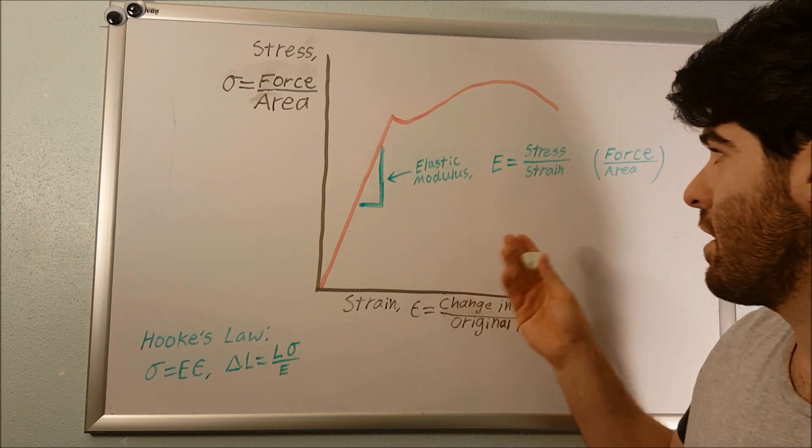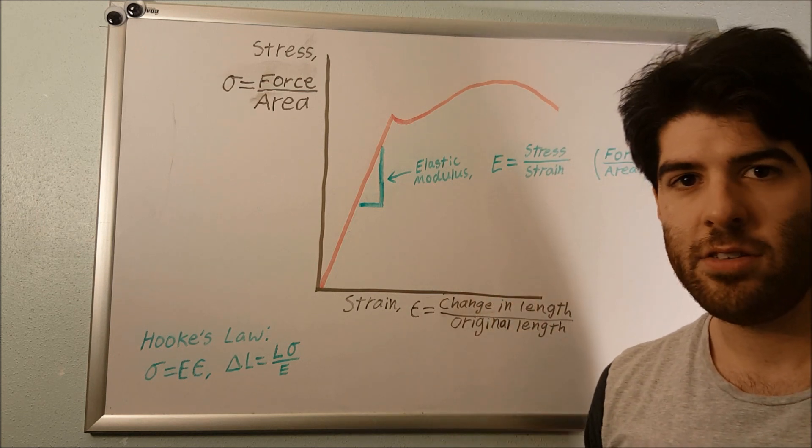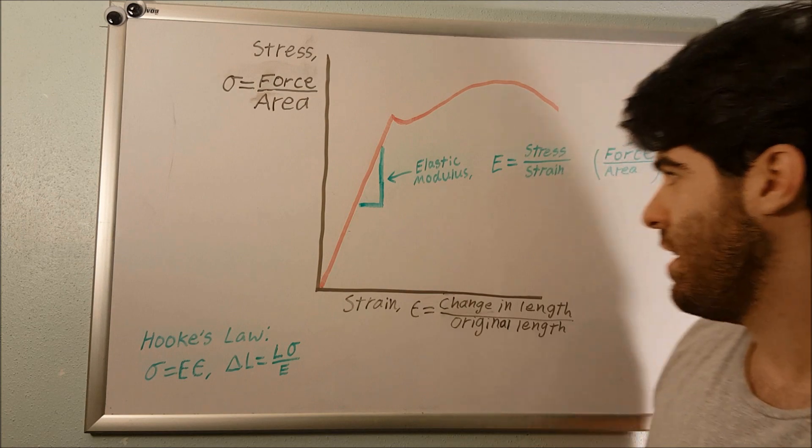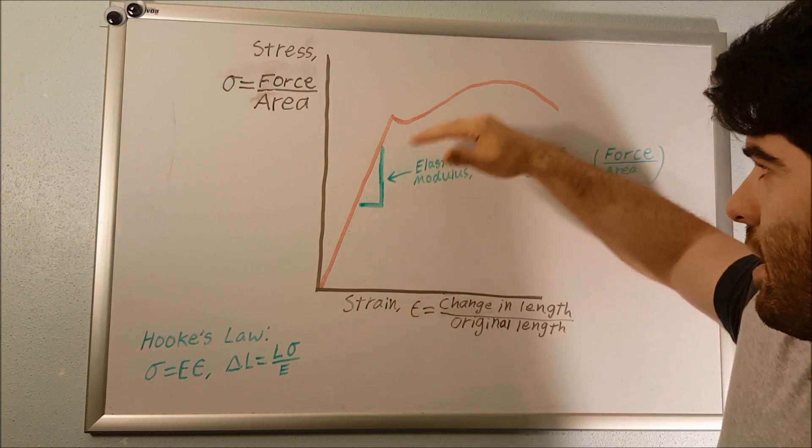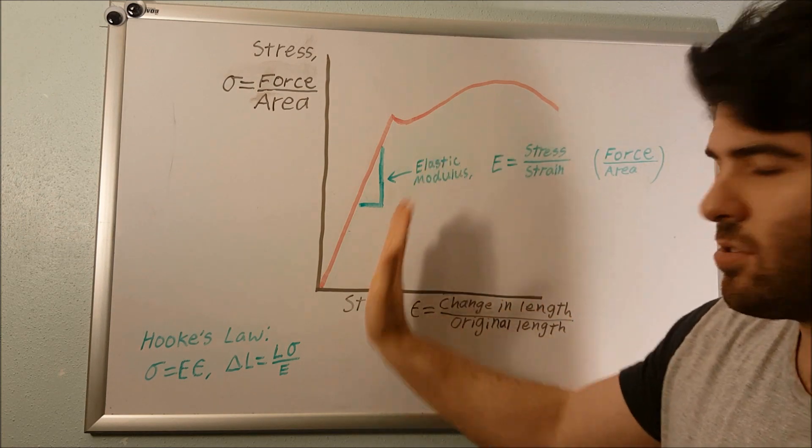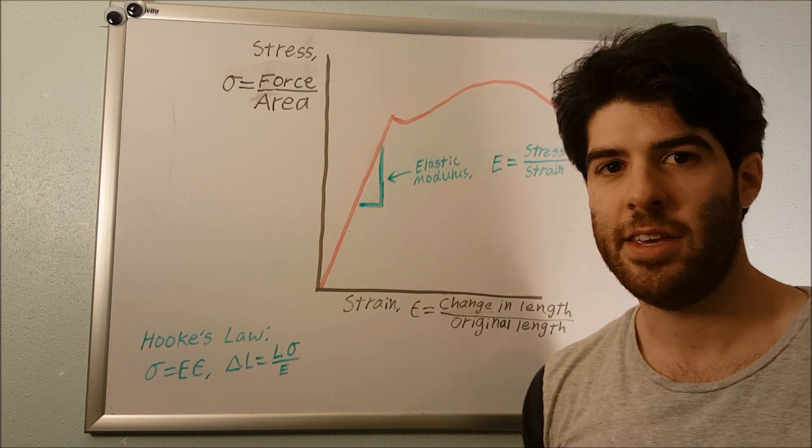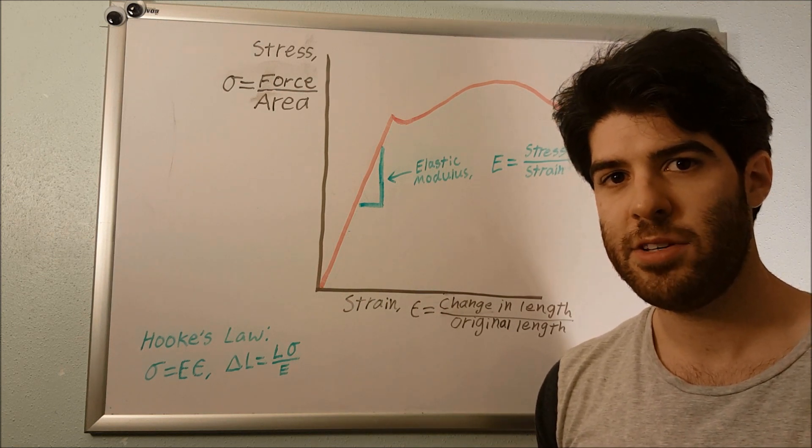you would get a graph that looks like this. This graph has two distinct regions: a straight region and a not straight region. This straight region is known as the linear elastic region of a material.